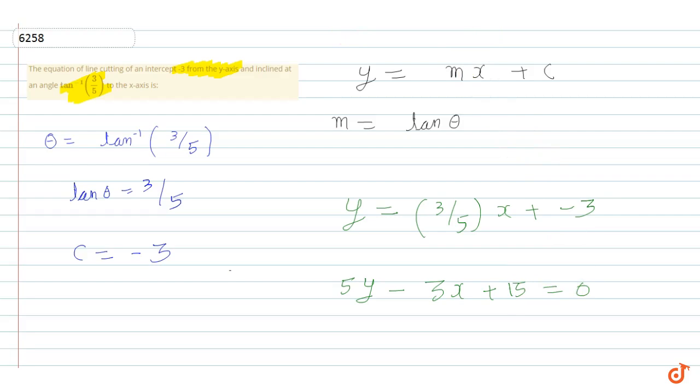So, this is the answer for this question. 5y minus 3x plus 15 is equal to 0.